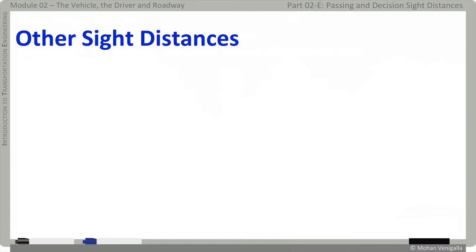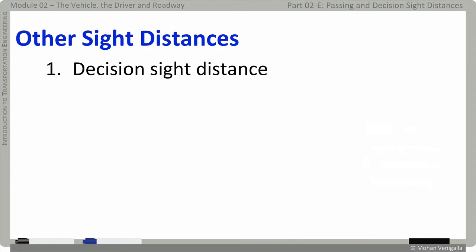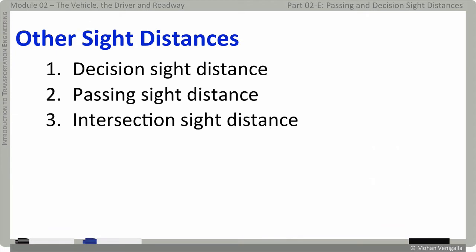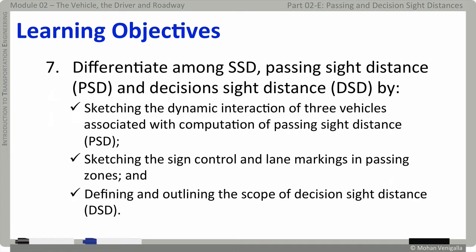In addition to stopping sight distance, we deal with three other sight distances: decision sight distance, passing sight distance, and intersection sight distance. In this part, we are going to talk about only the first two. We will briefly talk about intersection sight distance when we discuss intersection control.